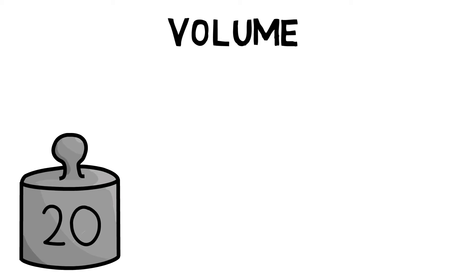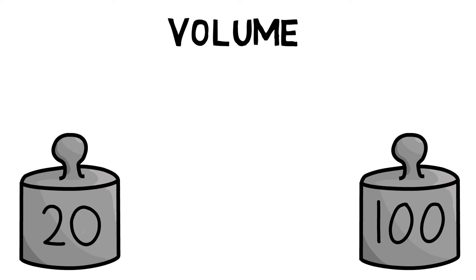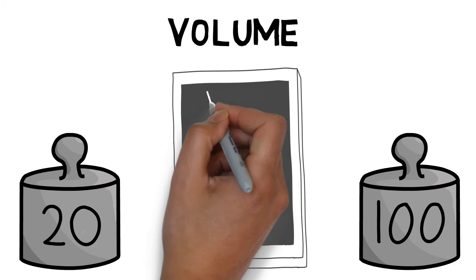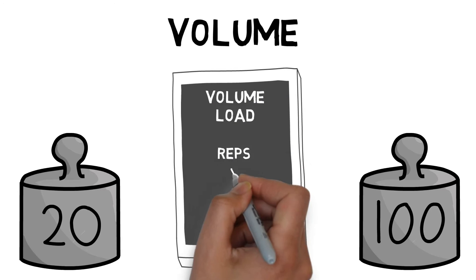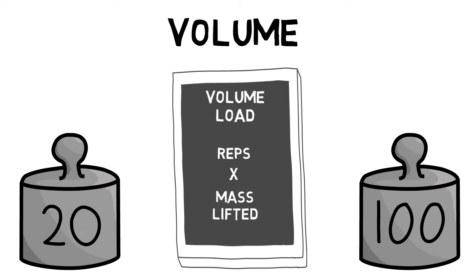There are a number of variables that can be manipulated through training to maximise performance and adaptations. Volume is an estimate of how much total work is accomplished and an estimate of total energy expended. Volume load, which is reps times mass lifted, is the best practical estimate of work accomplished during a workout.